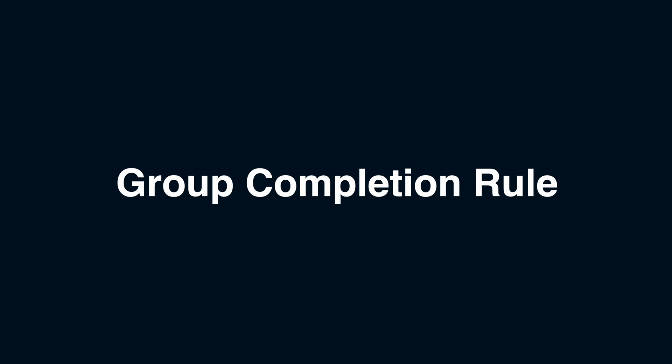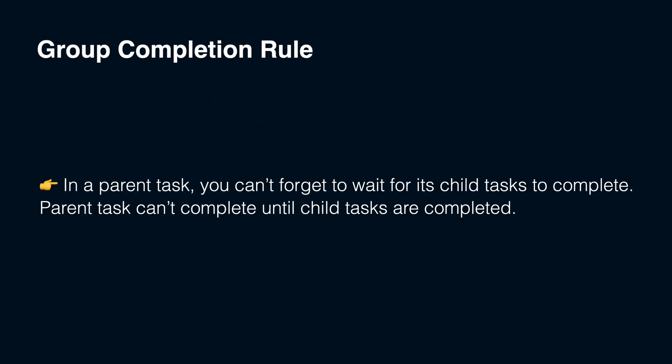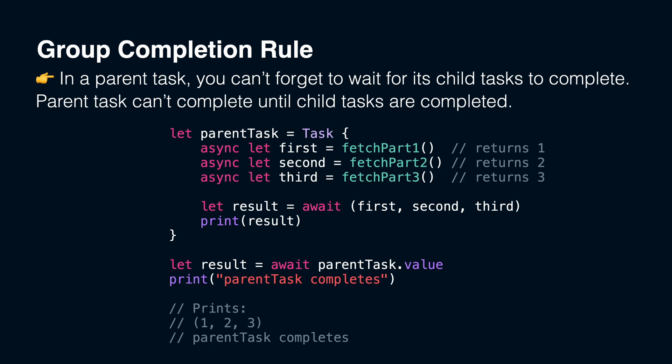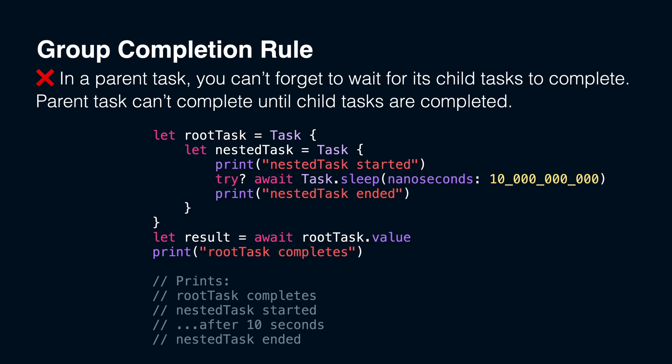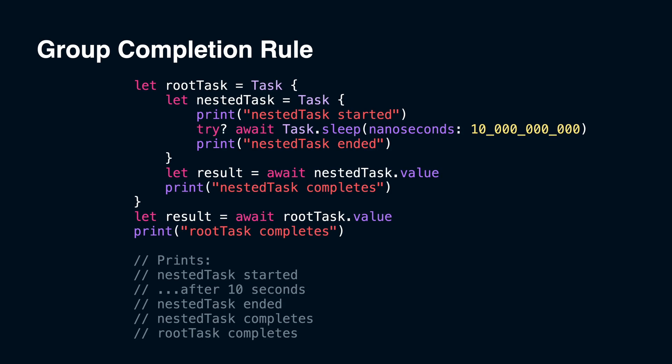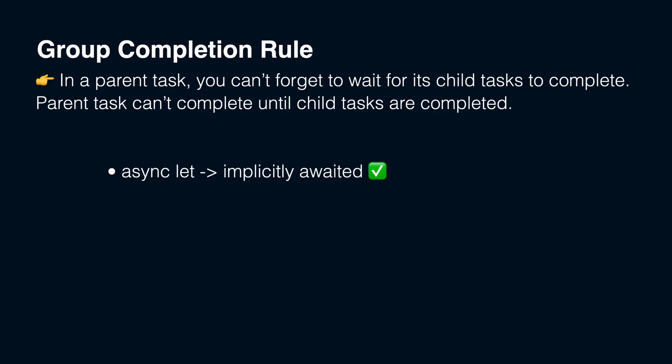Let's start with the group completion rule. In a parent task, you can't forget to wait for its child tasks to complete — a parent task can't complete until its child tasks are completed. Awaiting a parent task's value means waiting until it completes. The parent task completes will not be printed until all child tasks created by async lets are completed first. For a task group inside of an unstructured parent task, the behavior will be the same. Async lets will be implicitly awaited when execution leaves the local scope, which allows the parent task to complete after that as well, so group completion still works as expected.